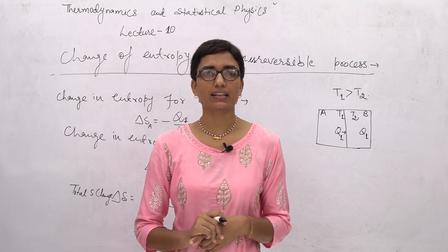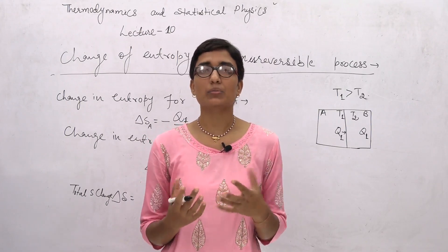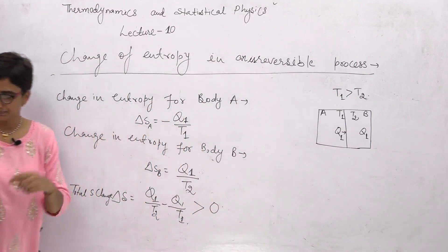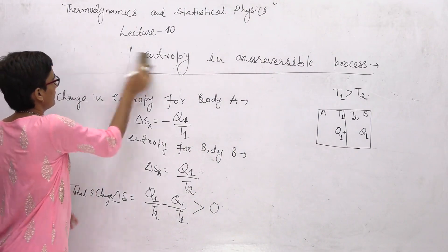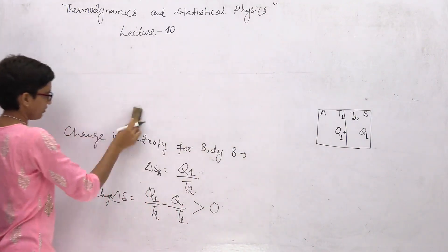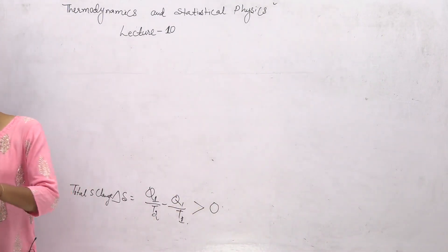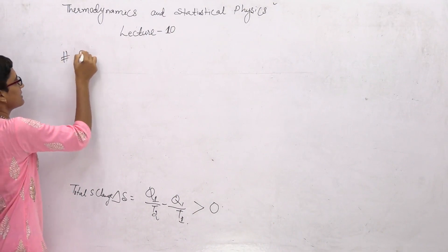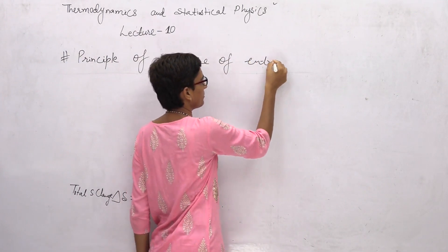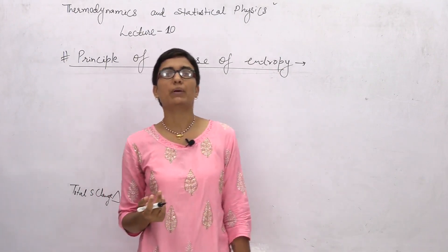If we talk about a reversible process, the entropy change may be zero (constant), or the change is positive. But for an irreversible process, the change in entropy will always be greater than zero. What we have just studied is written as a principle, and that principle is called the principle of increase of entropy. In an irreversible process, entropy always increases. And all processes in nature are irreversible, which means all natural events always increase entropy during their occurrence.